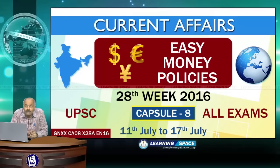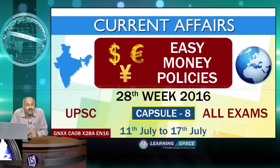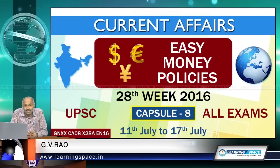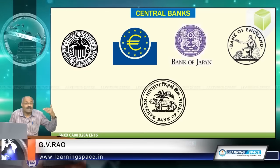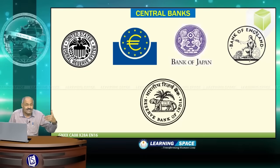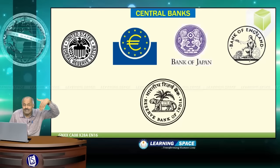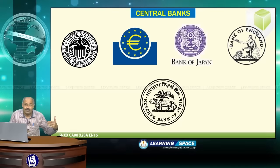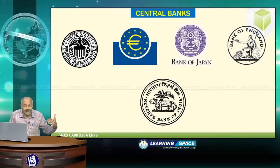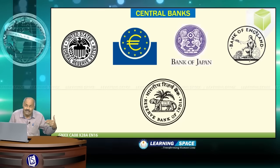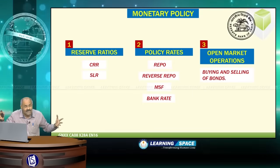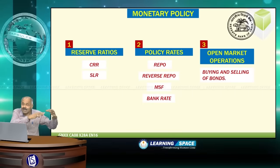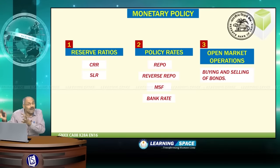Welcome back to the last module of the 28th week. This is on easy money policies adopted by central banks of developed countries. The Federal Reserve is the central bank of the United States, the European Central Bank is for the Eurozone, the Bank of Japan is Japan's central bank, the Bank of England is for the United Kingdom, and the Reserve Bank of India is our central bank. For a country like India, monetary policy has three main aspects: reserve ratios, policy rates, and open market operations.